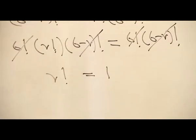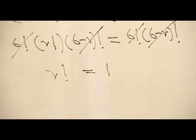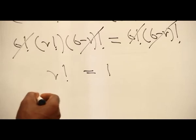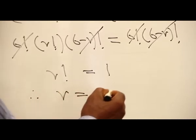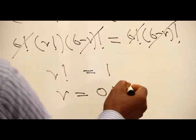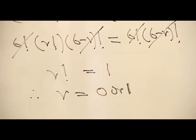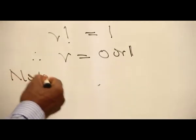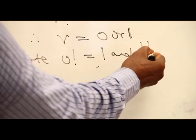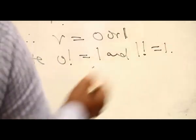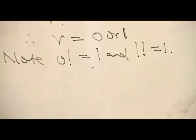If r factorial equals 1, then r can be 0 or 1, because 0 factorial equals 1 and 1 factorial equals 1. Remember that 0 factorial is 1. That's the answer. Thank you.